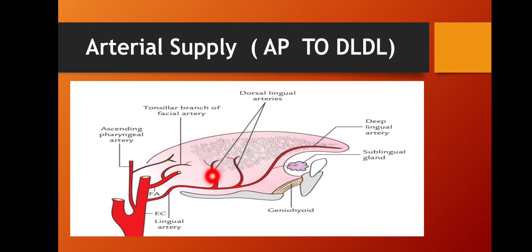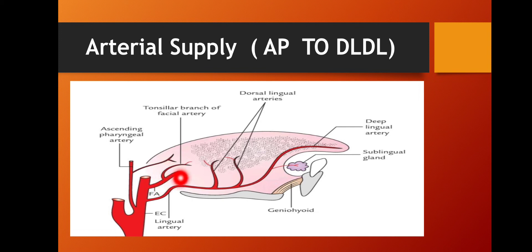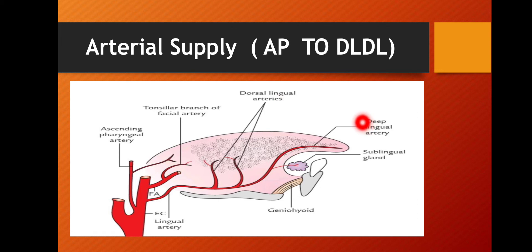Those branches are the dorsal lingual arteries and the deep lingual artery. From the lingual artery we get 2 dorsal lingual arteries and one deep lingual artery. Next, from the facial artery we get the tonsillar branch of the facial artery. One more artery is the ascending pharyngeal artery. These arteries — ascending pharyngeal, tonsillar branch of facial artery, dorsal lingual arteries, and deep lingual artery — are the major arterial supply for the tongue.